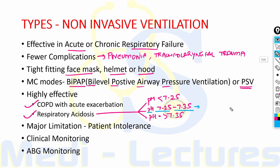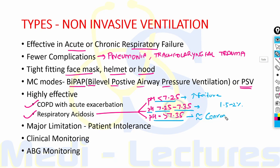For respiratory acidosis, if the pH is between 7.25 and 7.35, NIV has good outcomes with low failure rates of around 1.5 to 2%. If respiratory acidosis is more severe with pH less than 7.25, it has high failure rates. If pH is more than 7.35, that is very mild respiratory acidosis, NIV is equivalent to conventional treatment with bi-oxygen therapy and pharmacotherapy like steroids and bronchodilators — it is no better than conventional treatment.